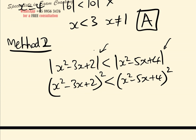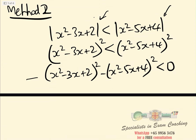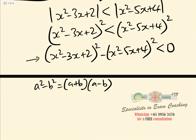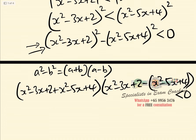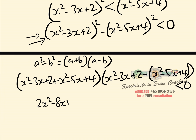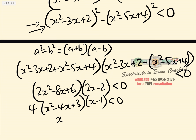So we get (x squared minus 3x plus 2) squared less than (x squared minus 5x plus 4) squared. Bringing both terms to one side and applying the difference of two squares — a squared minus b squared equals (a plus b)(a minus b) — we rewrite this as (x squared minus 3x plus 2 plus x squared minus 5x plus 4) times (x squared minus 3x plus 2 minus x squared plus 5x minus 4) less than 0. Simplifying gives (2x squared minus 8x plus 6)(2x minus 2) less than 0.